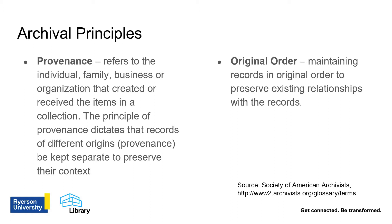The second principle is that of original order. Some records come into an archive already organized by the record's creator, usually by how they were used. If this is the case, an archive should not reorganize those records according to their own wishes — for example by date, into alphabetical order, or by type of material. That being said, many records have no set order when they are donated, so it is up to the archives to arrange and describe them in a way that is most logical in relation to the materials in question.